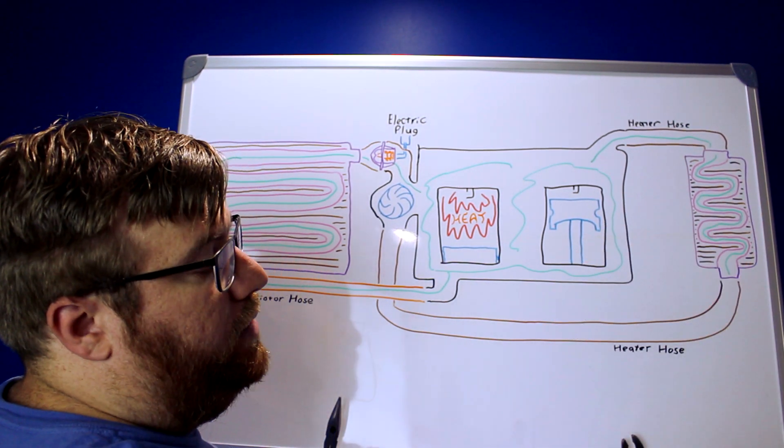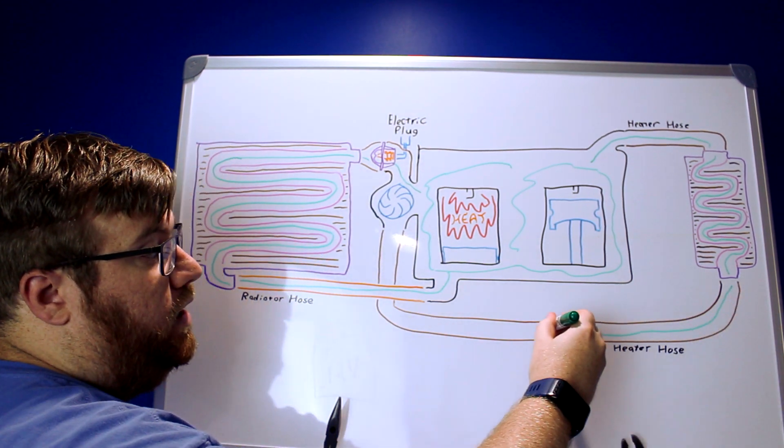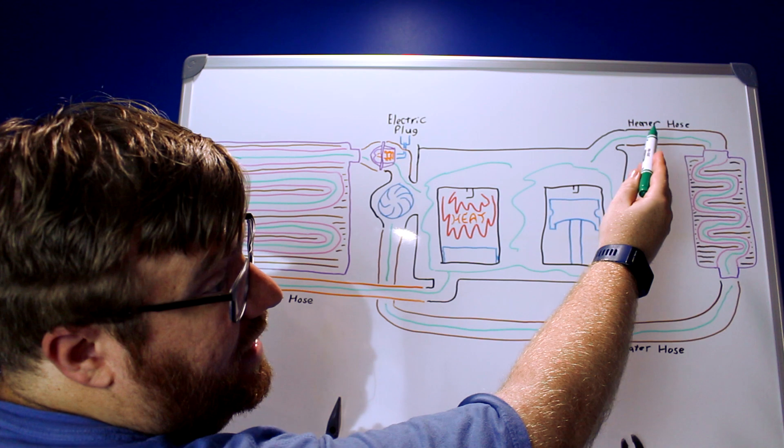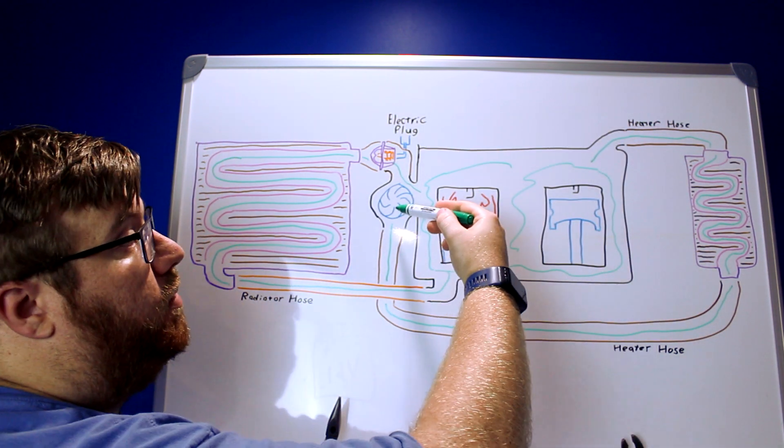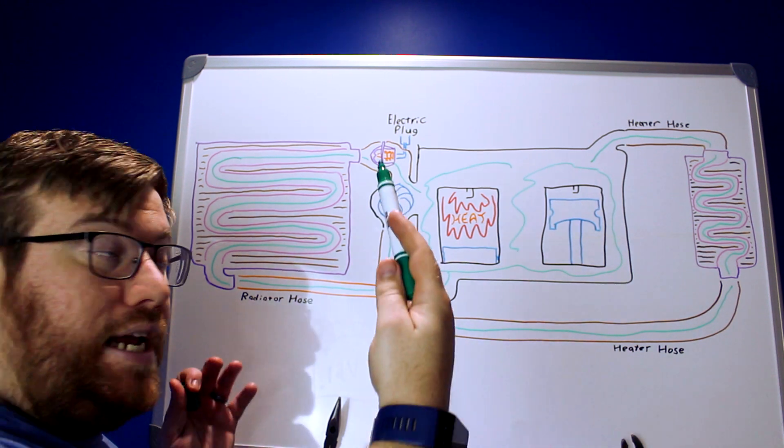The air will take the heat from this coolant as it passes through it, and send it to your cabin area. Then the cooled down fluid passes back through this lower hose. The hot side of the heater hose would actually come from the water pump, but I ran out of space to draw that,